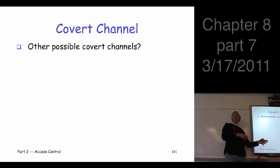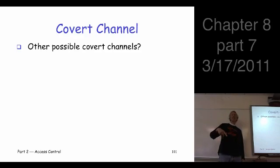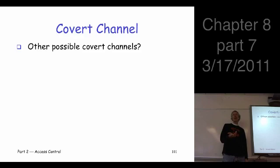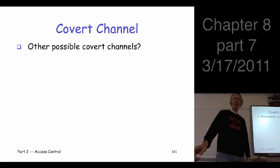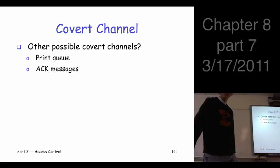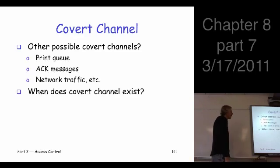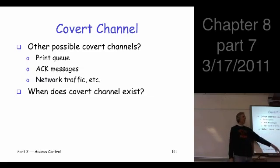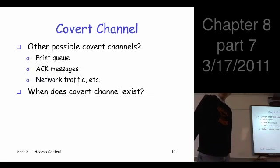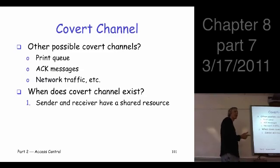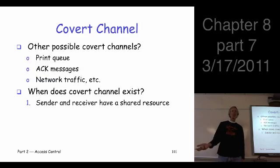How about the print queue? Same sort of thing — you could put something on the print queue, and people can see what's on the print queue. You could be even more clever and use different file names, which would give you more than one bit of information. How about networking protocols? Network protocols are filled with all kinds of possibilities — you could do all kinds of timing things, sending packets and stuff. There are lots of possibilities here if you think about it.